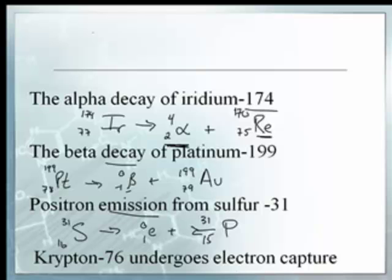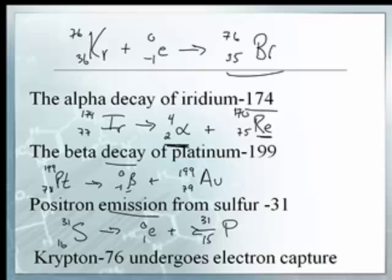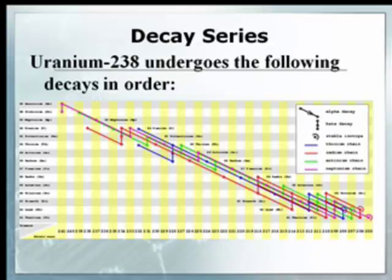All right. An electron capture for krypton. I'll do that up here. Krypton-76. That's krypton 36. 36. It's going to capture an electron. So it's a beta particle. So that's going to be 76 and 35, right? It is, yeah. And 35 is bromine. So that's the answer. This is easy, guys. Yeah. It's just so easy.